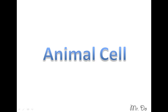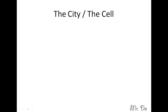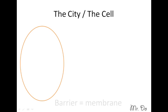Animal cell. Today we're going to build a city. First off we're going to need some kind of barrier or border, and that circle is always going to represent our barrier.